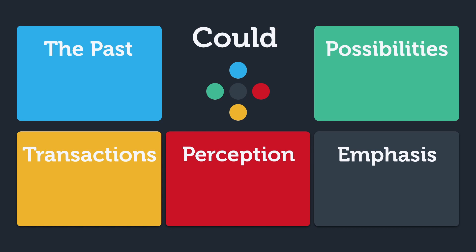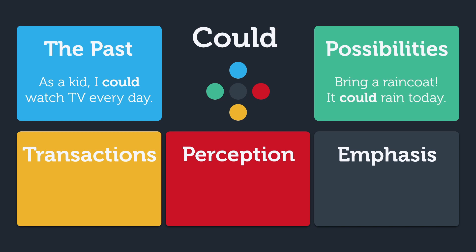An example of 'could' in the past is: as a kid, I could watch TV every day. A possibility in the future might be: bring a raincoat, it could rain today. A transaction refers to interacting with someone else by making offers, requests, suggestions, or asking for permission. A good example is: could I give you a hand with dinner?